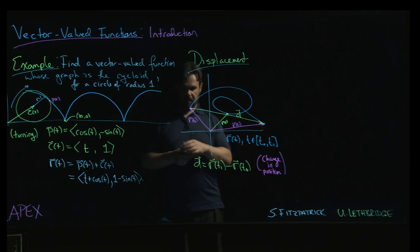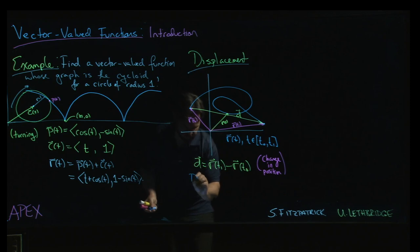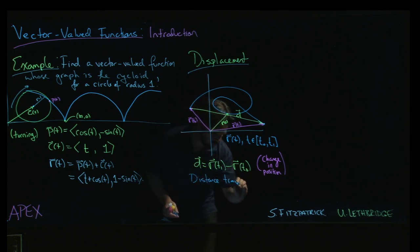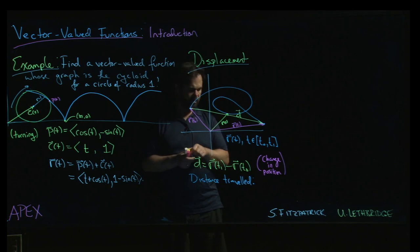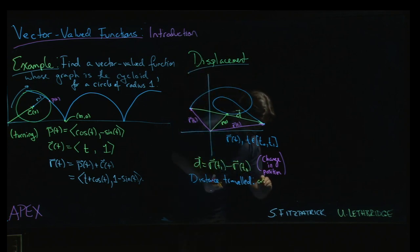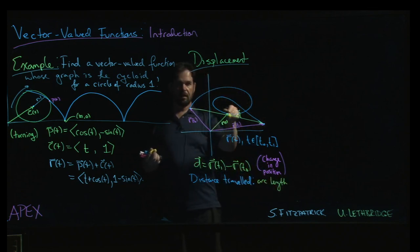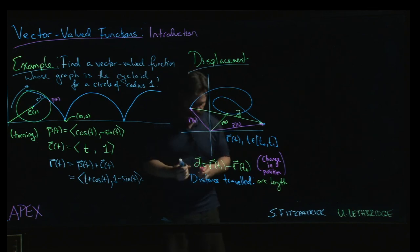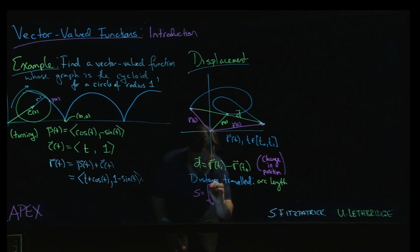And by the way, what is the distance traveled? If we wanted the distance traveled, well, we know what that is. That's arc length. The distance traveled is just the length of the curve. And we know how to calculate that. The distance traveled would just be, we usually call it s for arc length. The integral from t0 to t1 square root of...